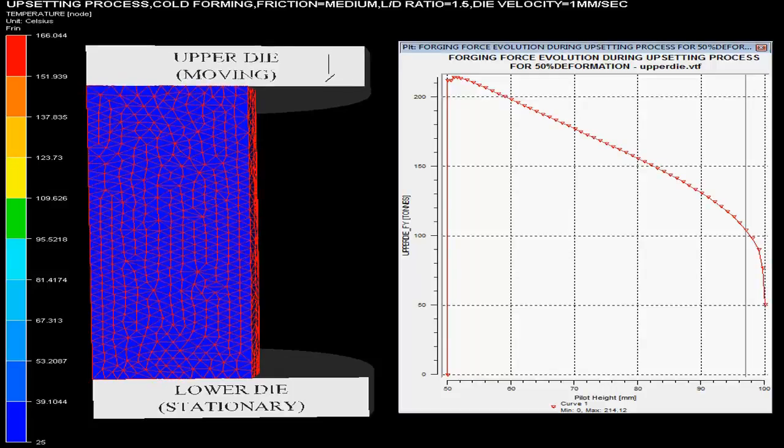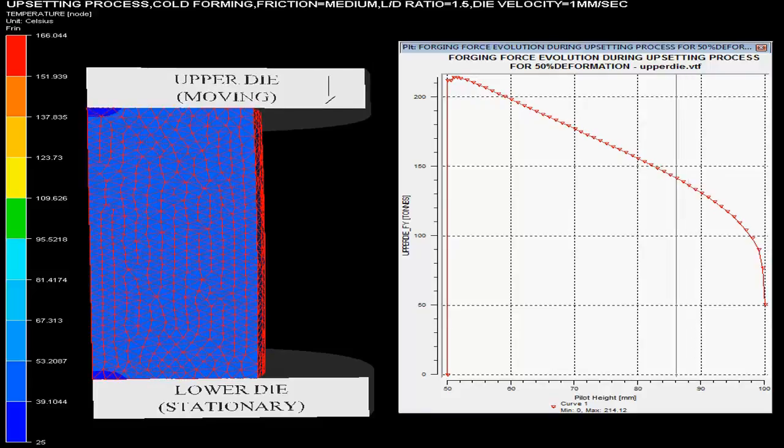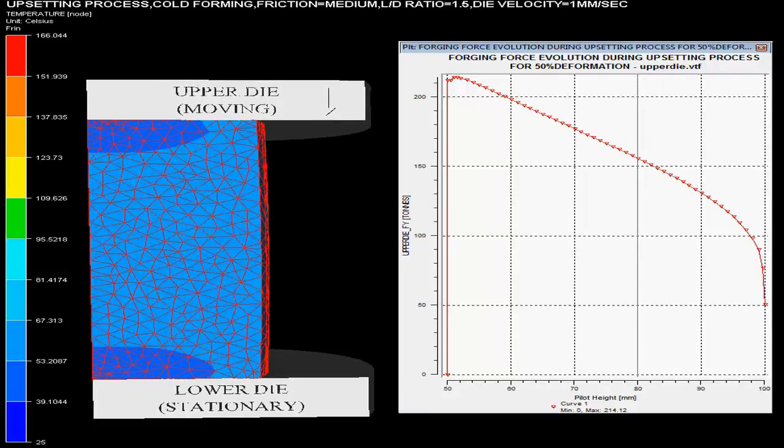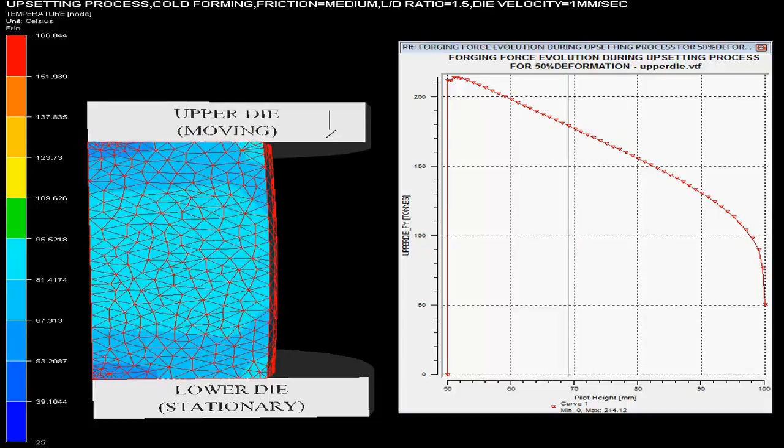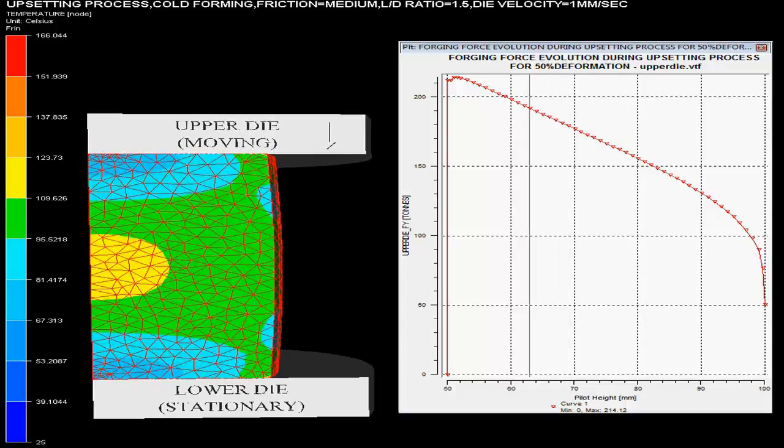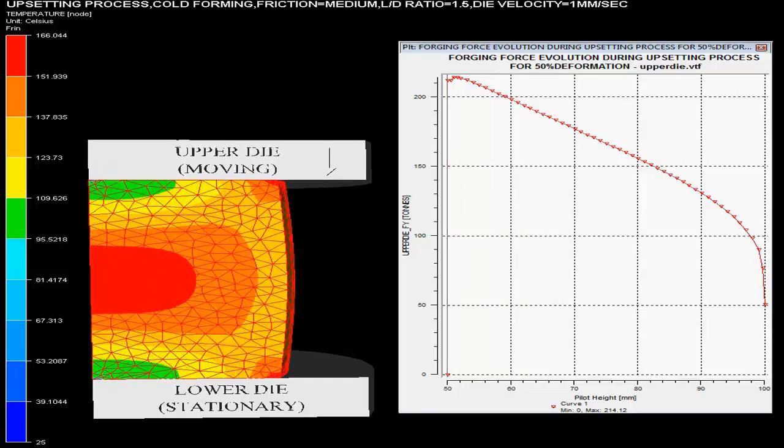Here, this metal forming simulation is depicting upsetting process. Upsetting is a process in which metal is plastically deformed and it is an open die forging process. This process is extensively used for shaping oversize billets by compressing them.